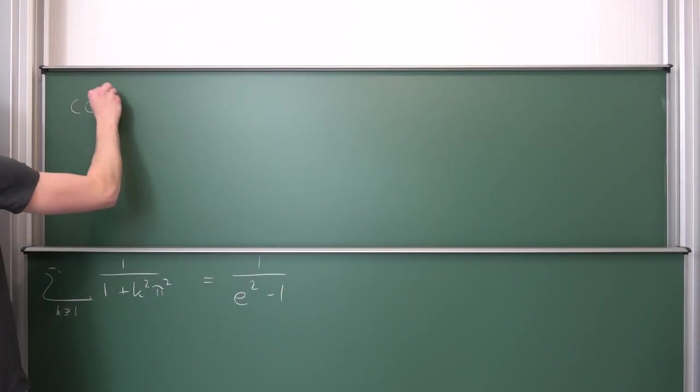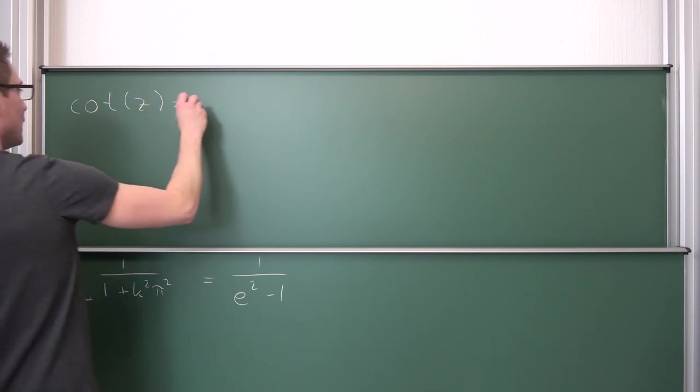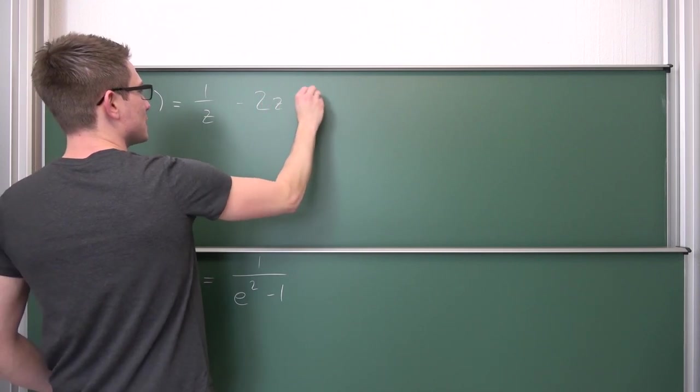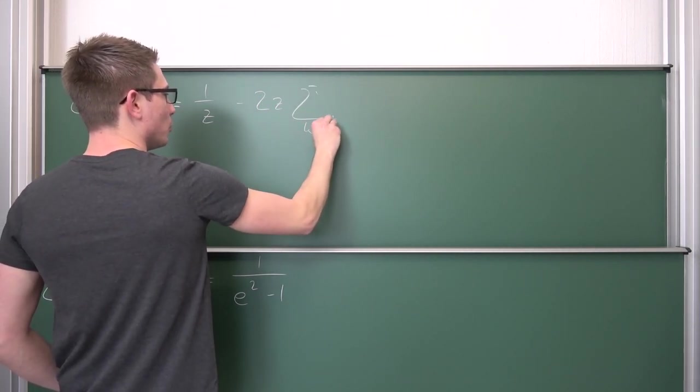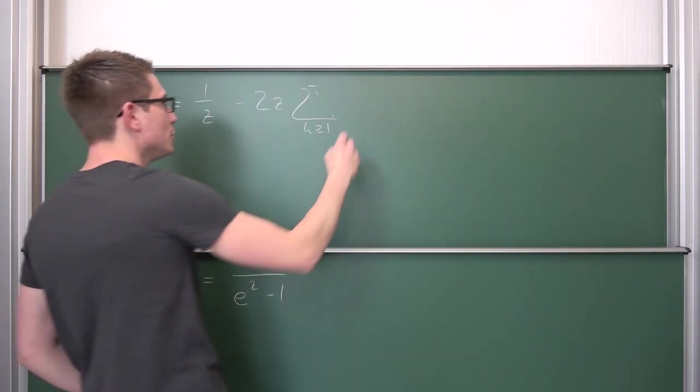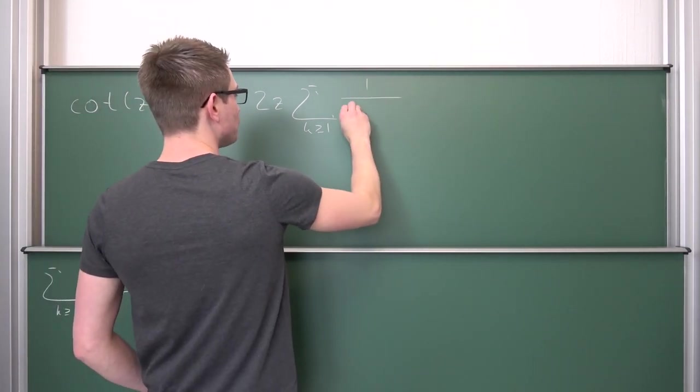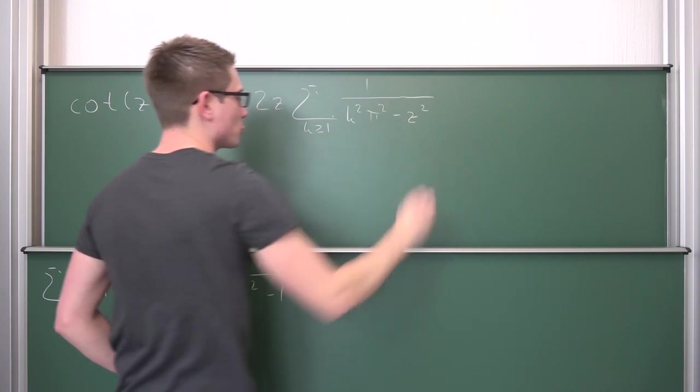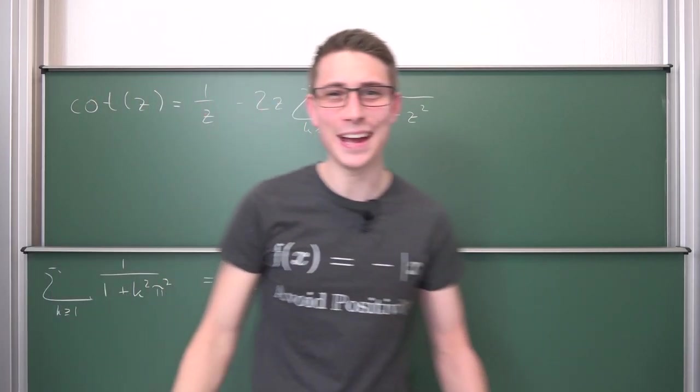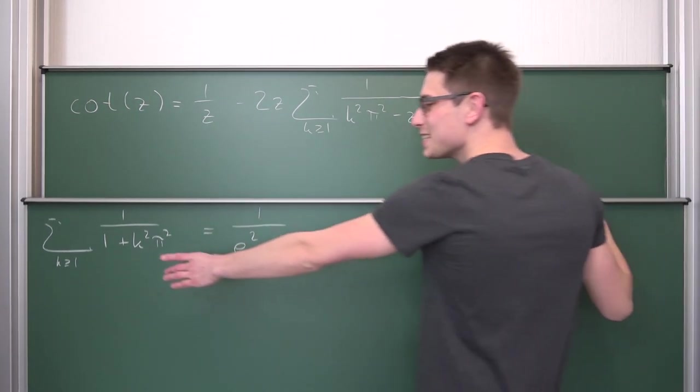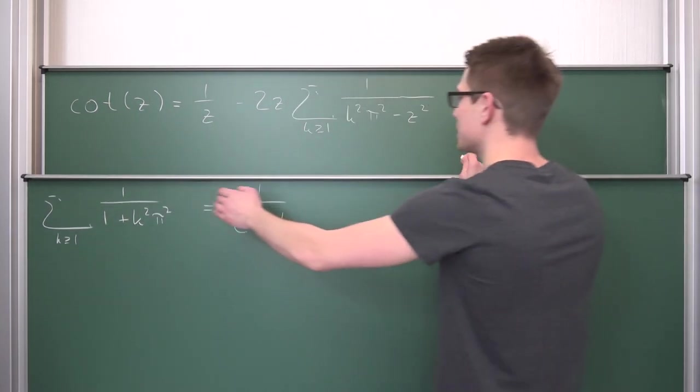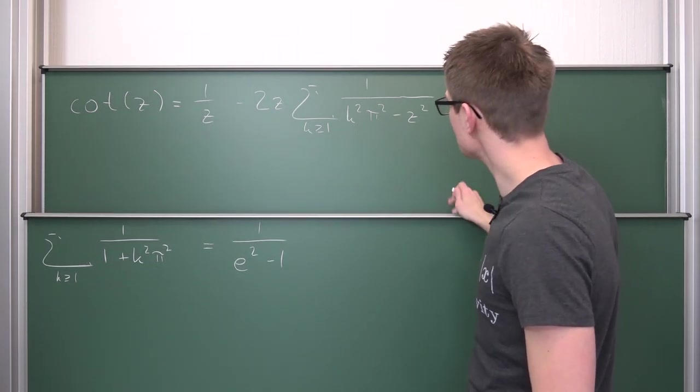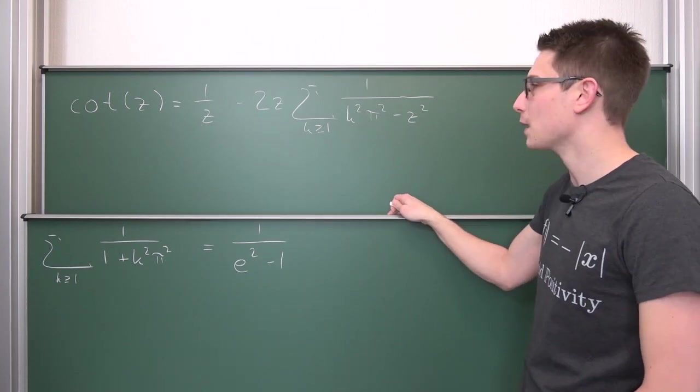So the cotangent of z is nothing other than 1 over z minus 2 times z, then we have the infinity boy where k reaches from 1 to infinity of 1 over k squared times π squared minus z squared. Maybe you can already see something - this series that we have right here is basically this one.